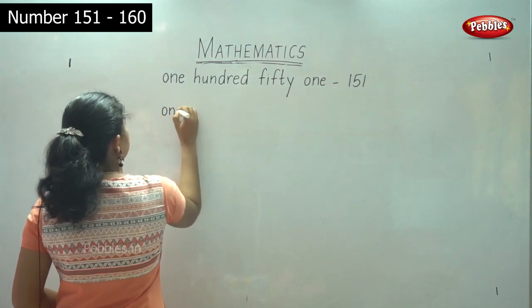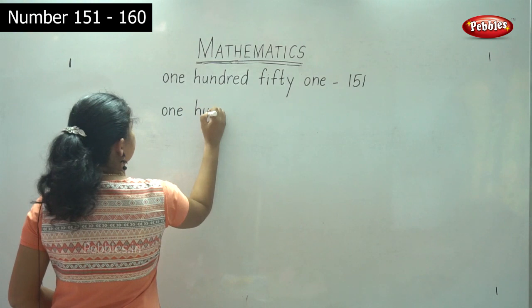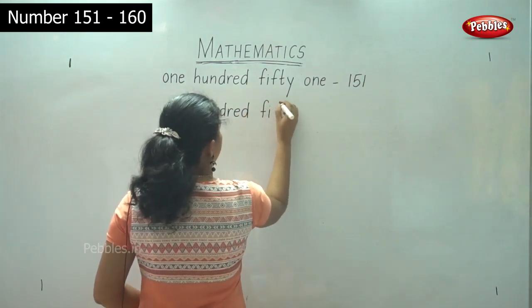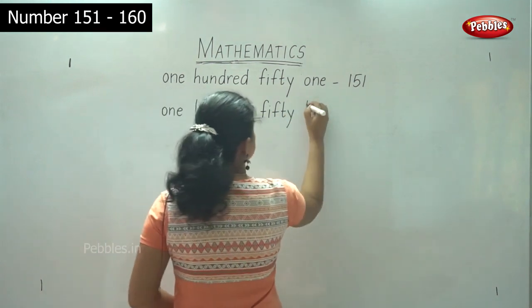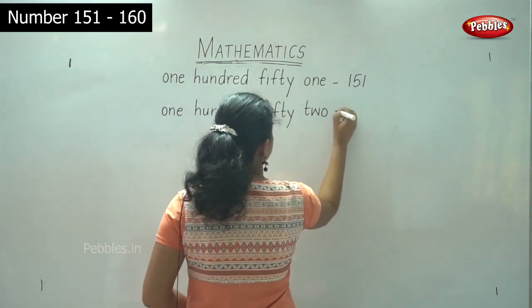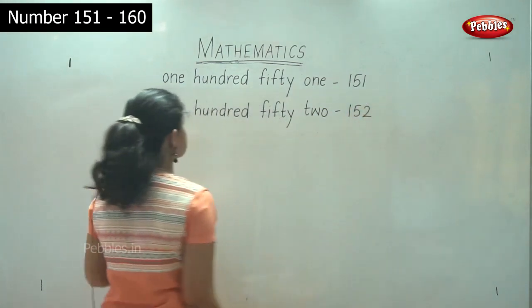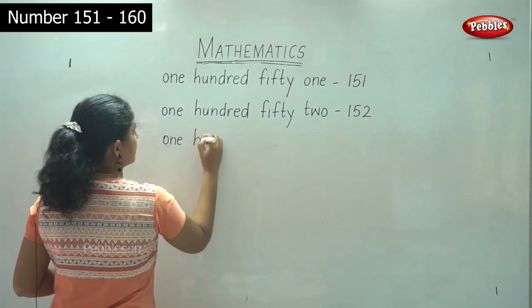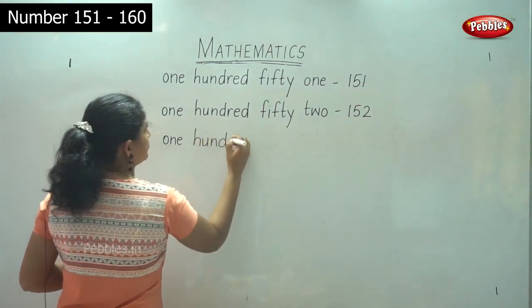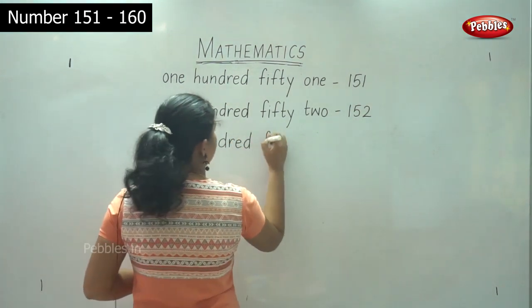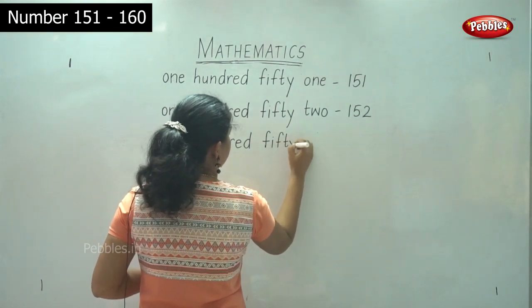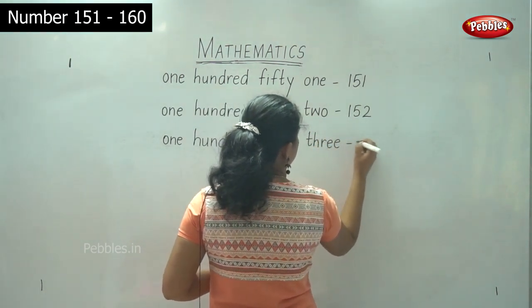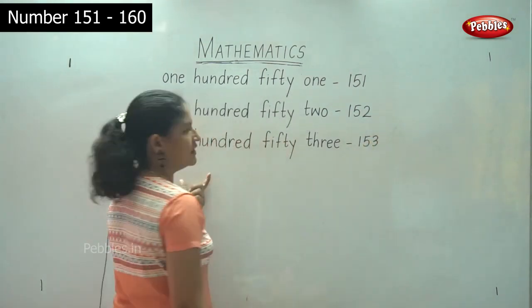152 is spelled O-N-E H-U-N-D-R-E-D F-I-F-T-Y T-W-O. 153 is spelled O-N-E H-U-N-D-R-E-D F-I-F-T-Y T-H-R-E-E.